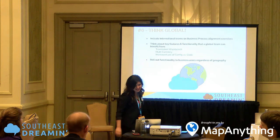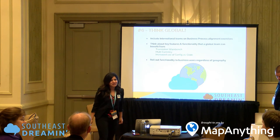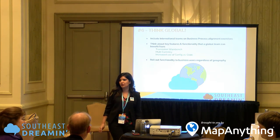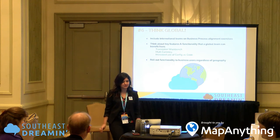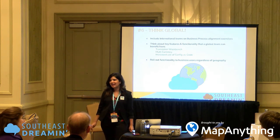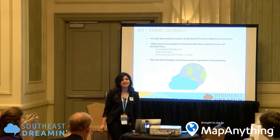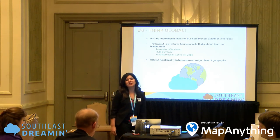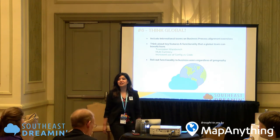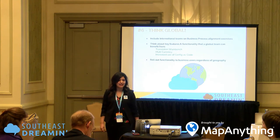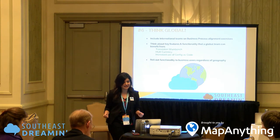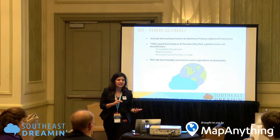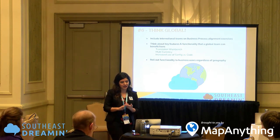The sixth thing is: think global. How many of you have companies with a headquarter organization outside of the U.S.? How many have customers outside of the U.S.? That shows you that we need to think on a global level and be scalable. We can't predict where business will take us tomorrow, so the system needs to be designed to adapt.